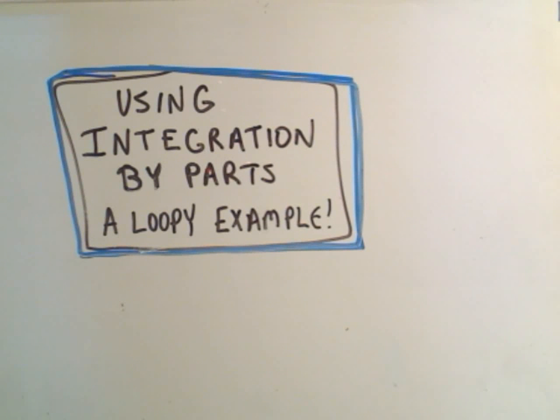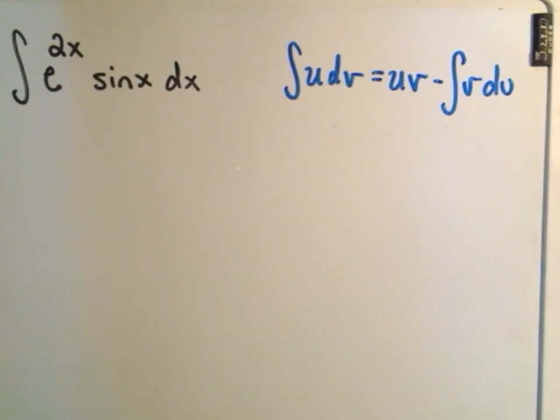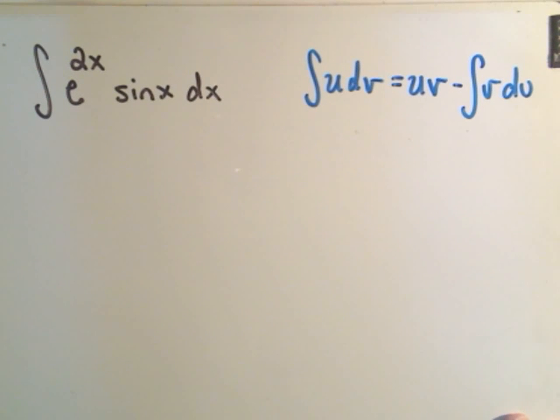All right, in this video we're going to do another integration by parts problem, and this is going to be an example that basically seems a little loopy. It feels like you do something and it doesn't make any progress, but in fact you're making perfect progress. So kind of a typical, I think, instructive example on this idea using integration by parts. So definitely something if you're a calculus student I think you'll want to commit to memory and keep in mind. So here we're going to integrate e to the 2x times sine x dx.